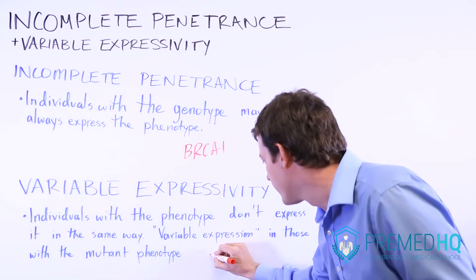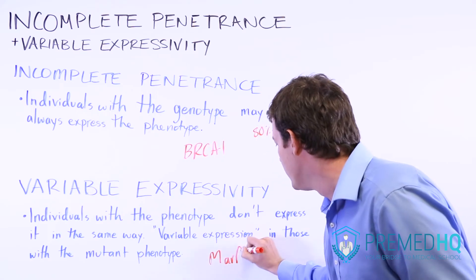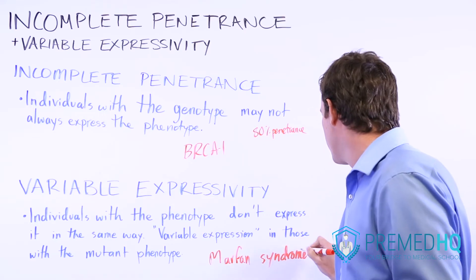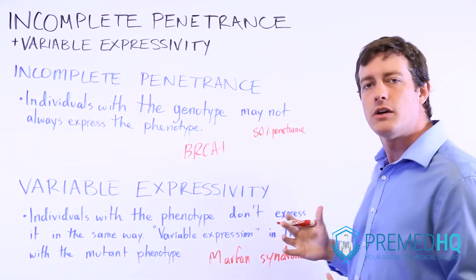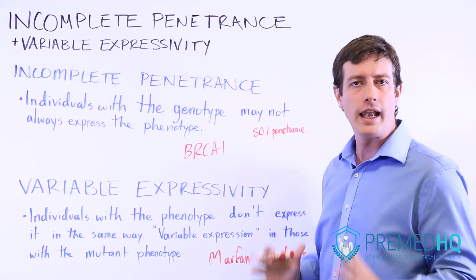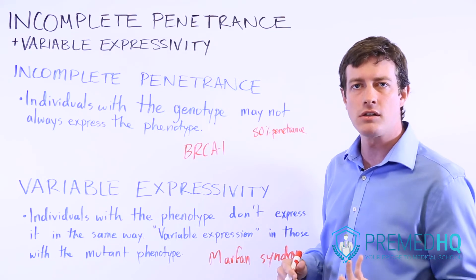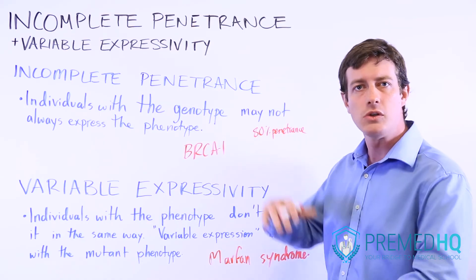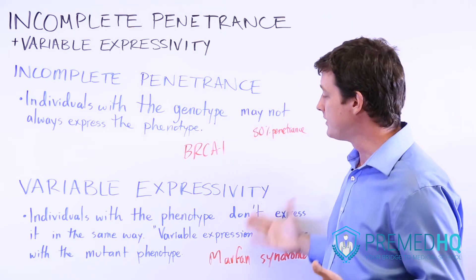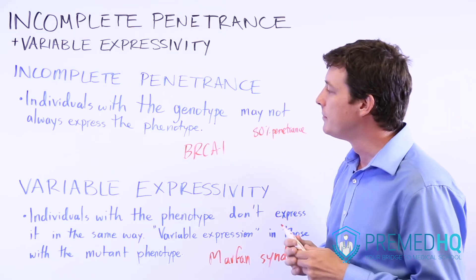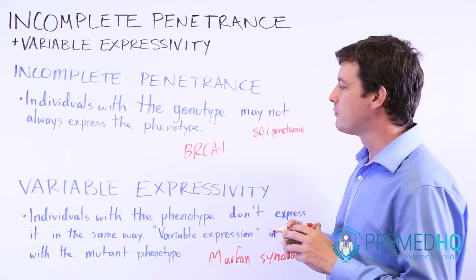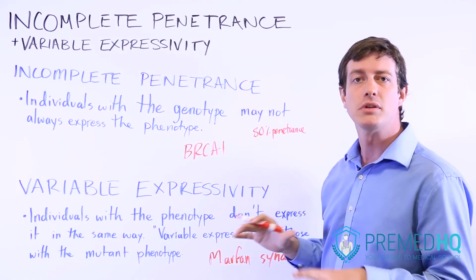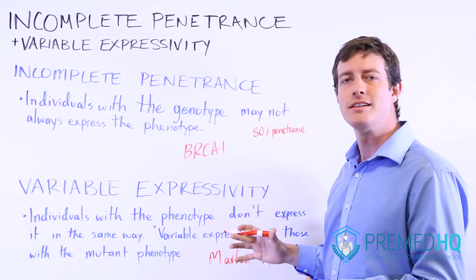One example — not MCAT material, but good for illustration — is Marfan syndrome. Marfan syndrome is a mutant phenotype that results in people being tall and thin with long fingers, and can also result in cardiac problems and other physiological issues. The interesting thing is that even though someone has Marfan syndrome and is displaying that penetrant phenotype, they might display it in different ways.